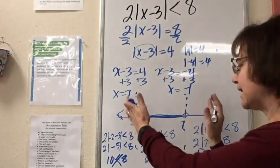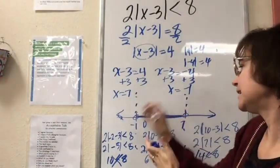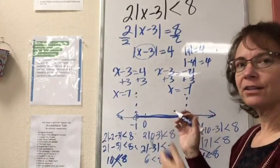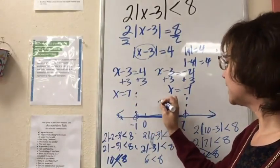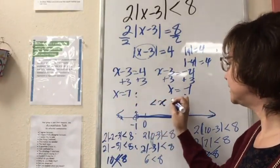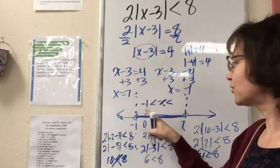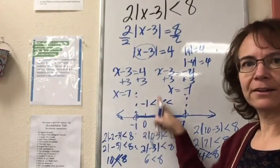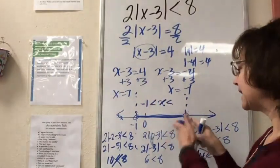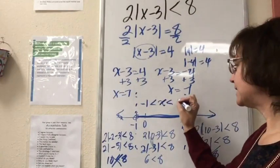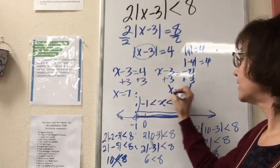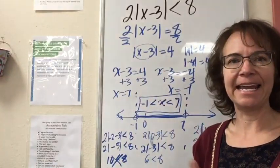Now in order to write that, this is happening simultaneously. It's simultaneously less than 7 and greater than negative 1. So we would write our algebraic solution where x is greater than negative 1 but less than 7. So that's happening together. That is an and: -1 < x < 7.